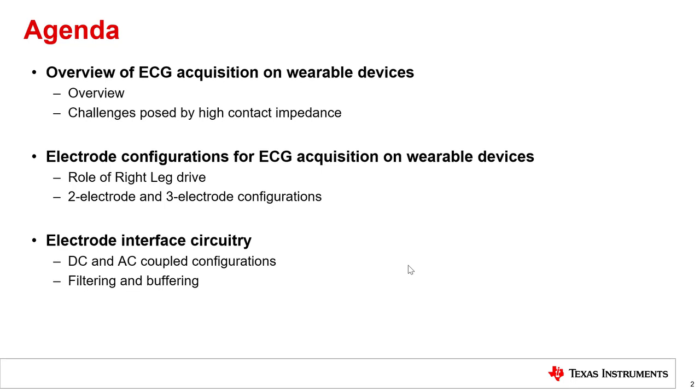We will examine the merits and demerits of DC and AC coupled configurations. We will also look at the considerations related to additional buffering and filtering that may be required between the ECG electrodes and the analog front end.